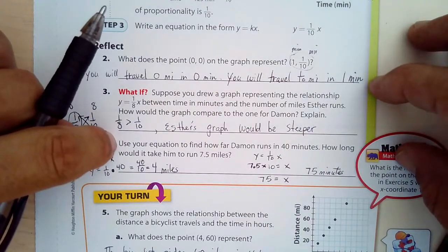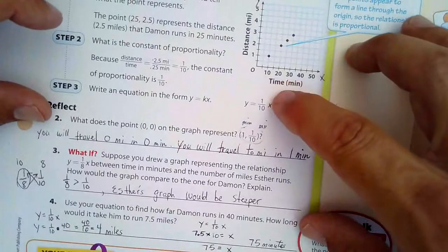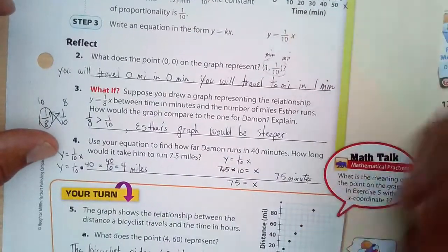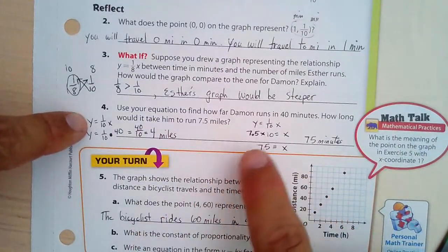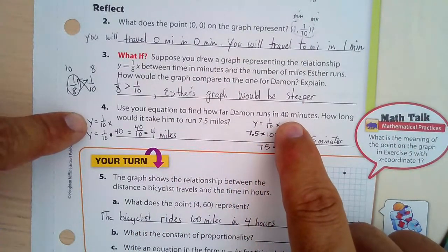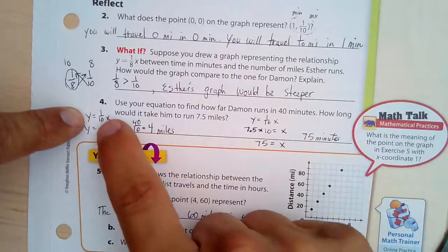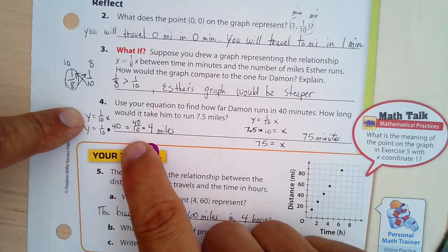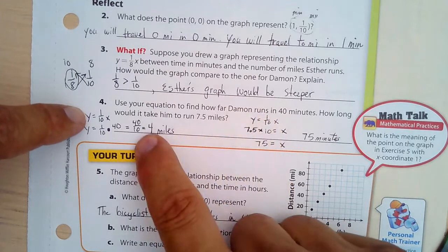Use the equation to find how far Damon runs in 40 minutes. Our equation was y equals 1 tenth x. So 40 minutes, and minutes is our x value right here. 1 tenth times 40 is 40 over 10, which is 4 miles. So in 40 minutes, he'll travel 4 miles.